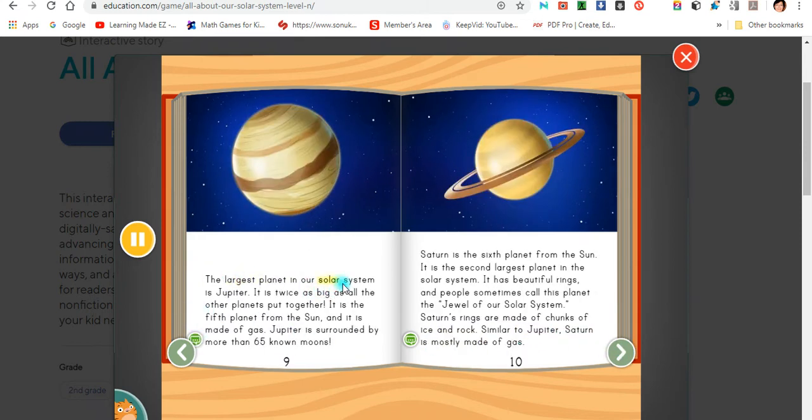The largest planet in our solar system is Jupiter. It is twice as big as all the other planets put together. It is the fifth planet from the sun, and it is made of gas. Jupiter is surrounded by more than 65 known moons.